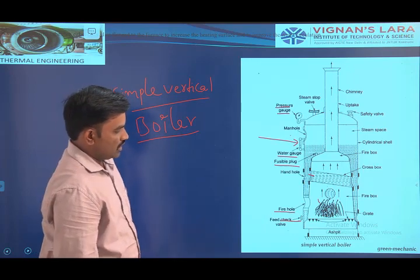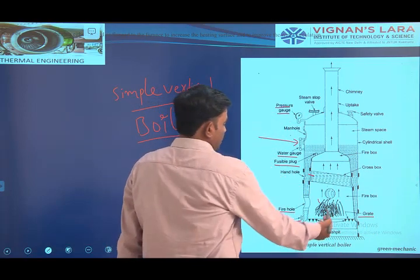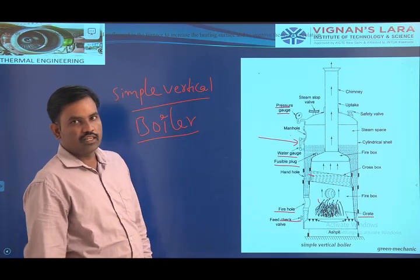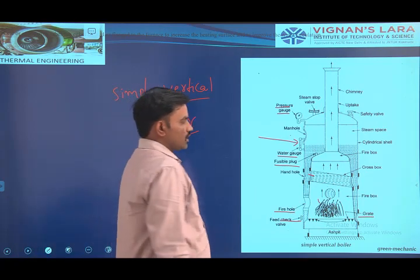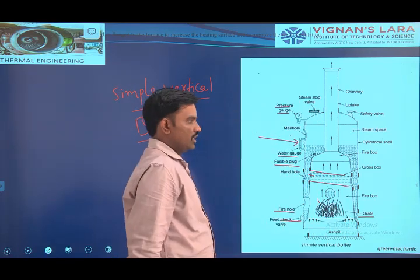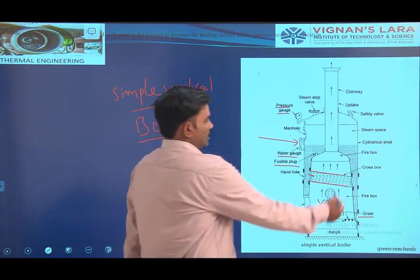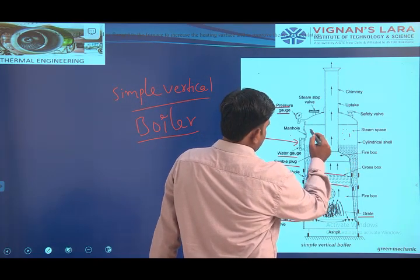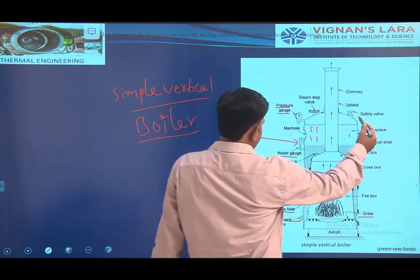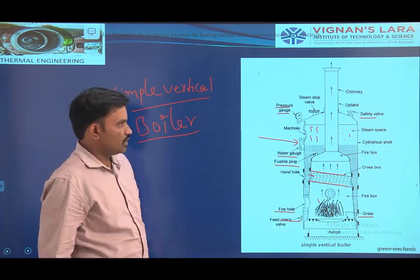It is a water tube boiler. In case of the grate, we are introducing coal onto the grate and burning it inside the boiler combustion chamber. In case of the cross box, we are arranging a number of horizontal tubes for increasing the heat transfer area. The cylindrical shell is the boiler shell. In case of the steam space, we are generating and collecting the steam. With the help of the safety valve, we are releasing excess pressure generated by the steam inside the boiler section.